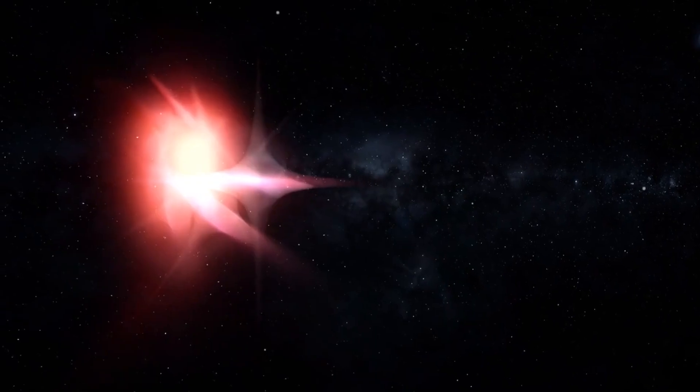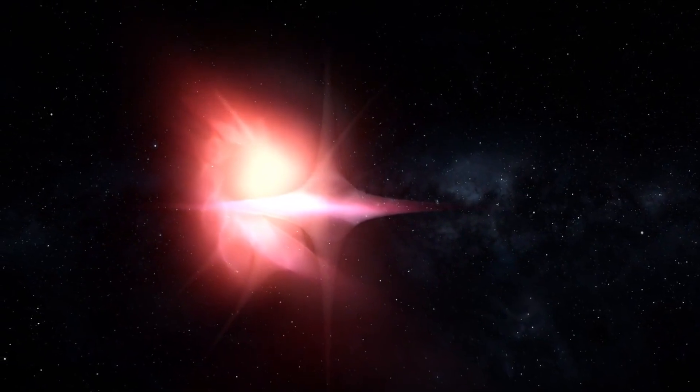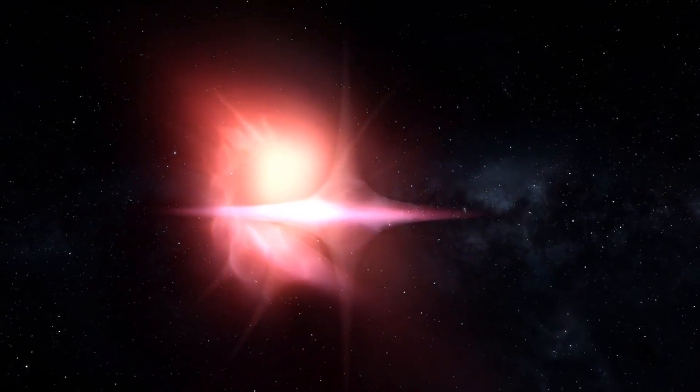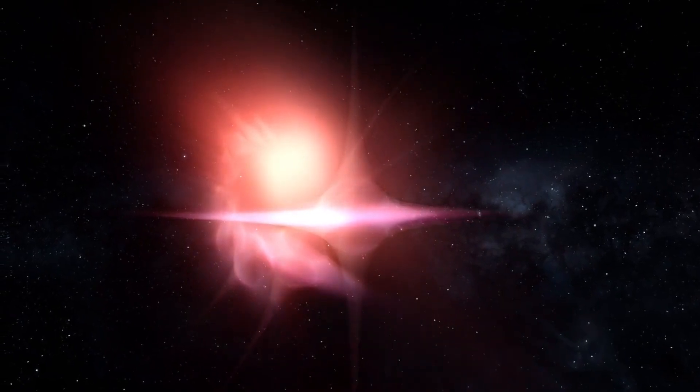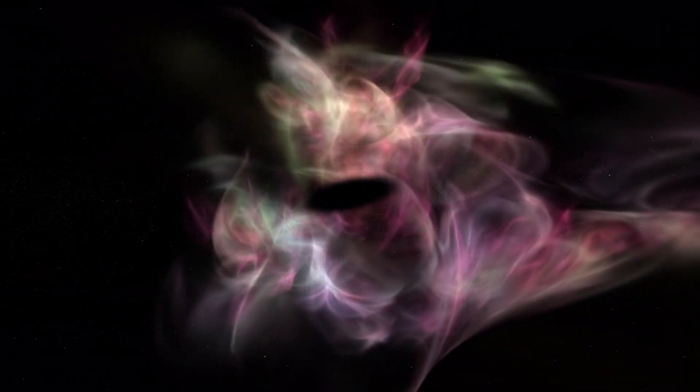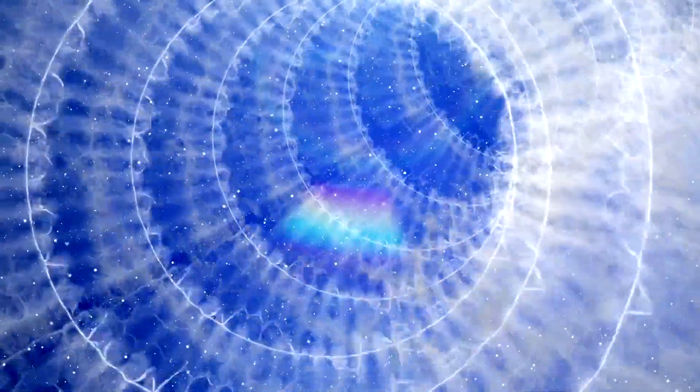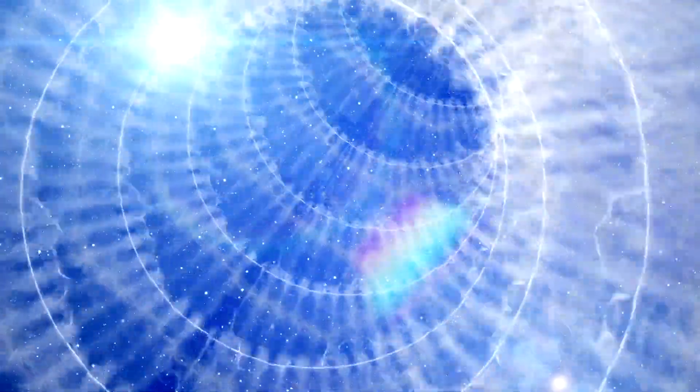SS 433, the first microquasar ever discovered, is located at the center of the supernova remnant W50, about 18,000 light-years from Earth. This system consists of a white supergiant star and a black hole, which together create powerful relativistic jets. These jets are so intense that they shape the surrounding supernova remnant, giving it a distinctive appearance. The high-energy gamma rays detected from SS 433 suggest that the particles in these jets are being accelerated to extreme speeds, potentially explaining the origin of high-energy cosmic rays.